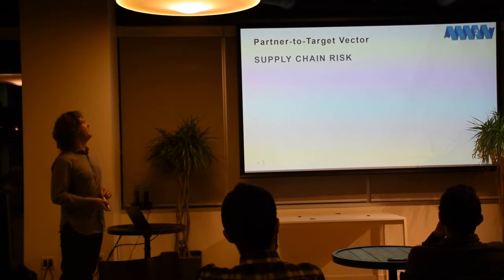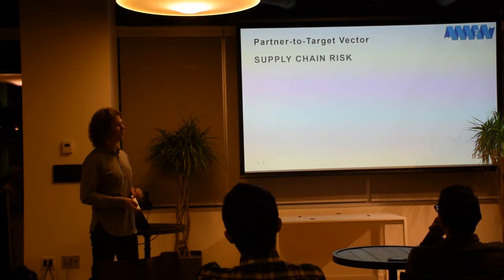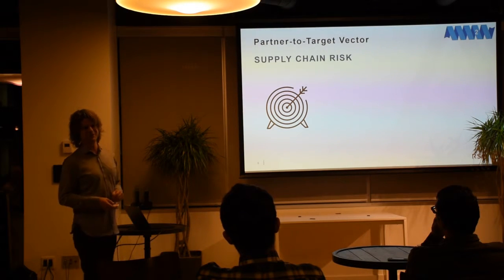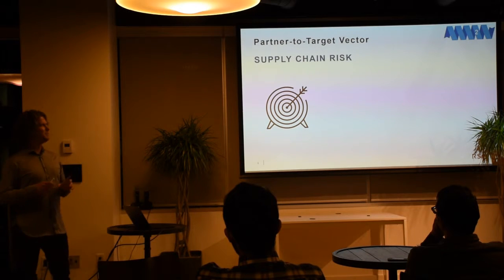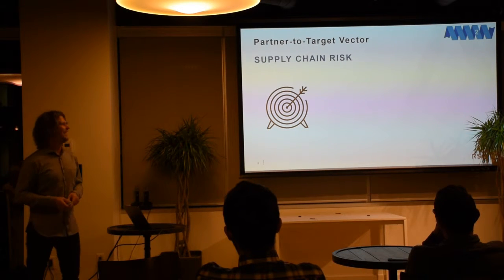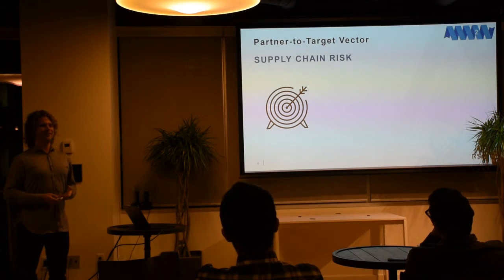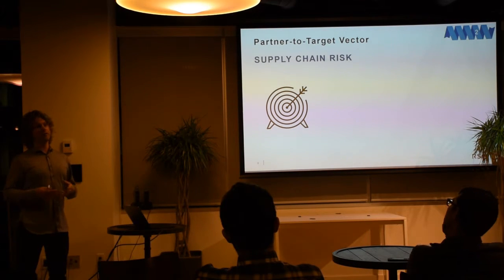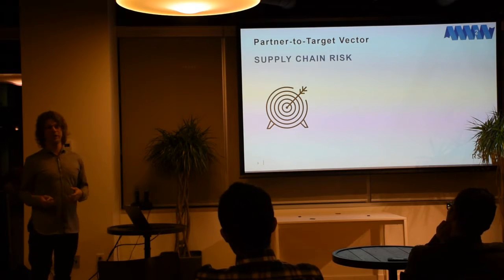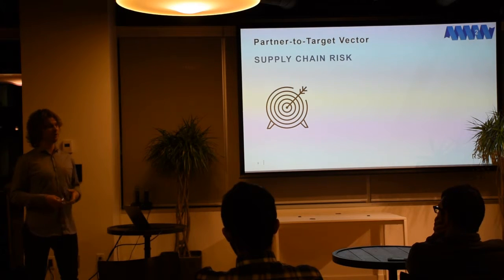The second P - partner, target, defender, or supply chain risk. There are a few good examples I'd like to walk through. Supply chain risk is an occurrence of a third party that you've given access to getting compromised. Being very cautious of who you actually allow access to your network and resources is something to be cognizant about. There's a company - it might be a U.S. retailer - where a third party they gave access to got compromised.